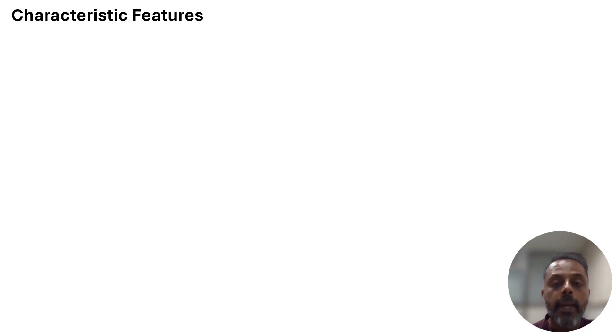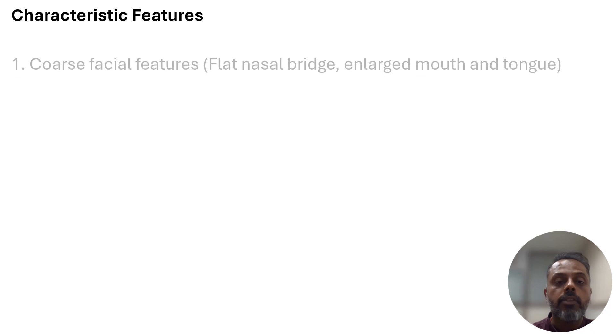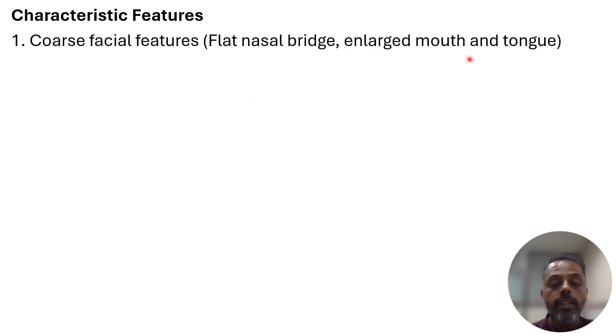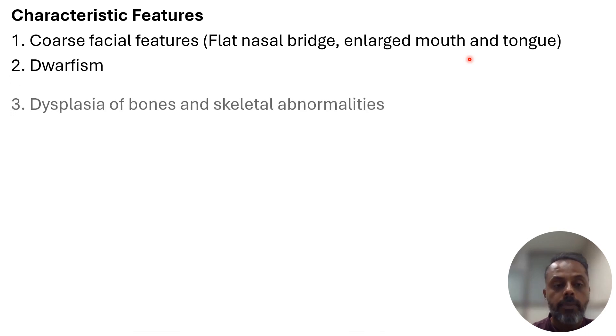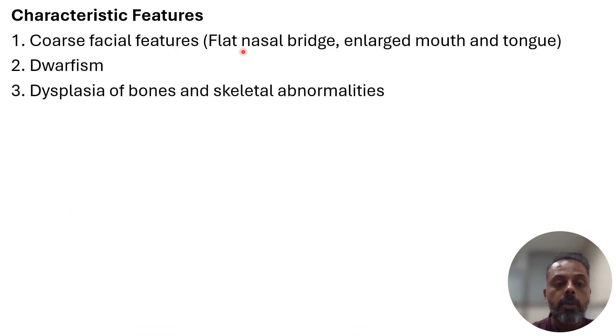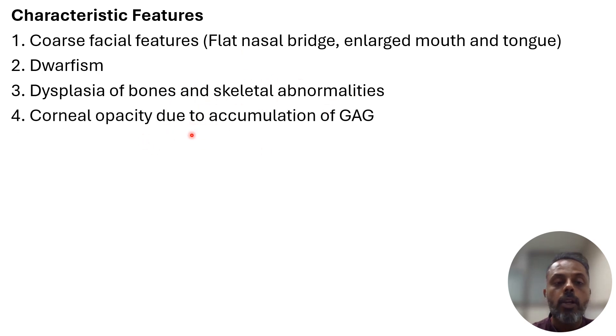Now the characteristic features. The first feature observed in mucopolysaccharidosis is coarse facial features — enlarged mouth and tongue along with flat nasal bridge. Apart from that there is hepatosplenomegaly, clouding of the cornea, mental retardation and developmental delay, dwarfism, heart disease, and dysplasia of bones and skeletal abnormalities. Corneal opacity is due to accumulation of glycosaminoglycans in the cornea.